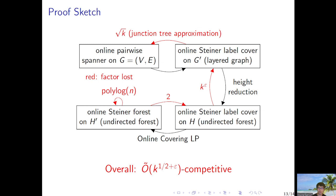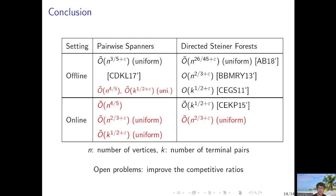So this is the high-level sketch of the proof. To conclude, our results mainly focus on online algorithms that are competitive and efficient. The main open problem is to improve the competitive ratios, as there is still a small polynomial gap between the offline approximation ratio and the online competitive ratio. Thanks.